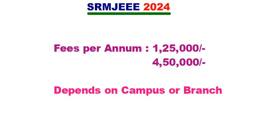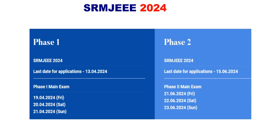To get a rough idea before applying, you can check the fees in the description. The last date for phase 1 applications is 30 April 2024. The exam dates for phase 1 are 19th, 20th, and 21st of the exam month.